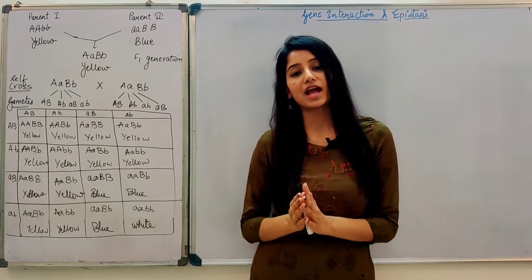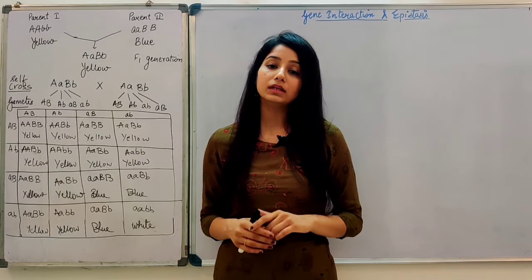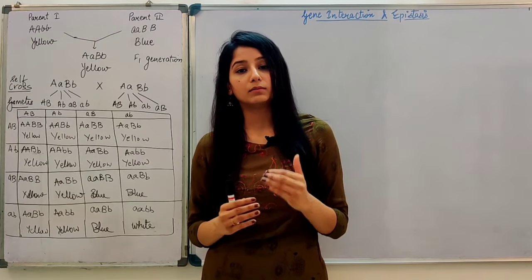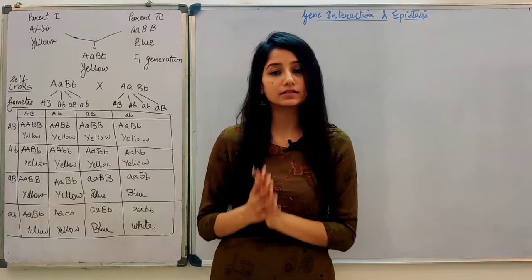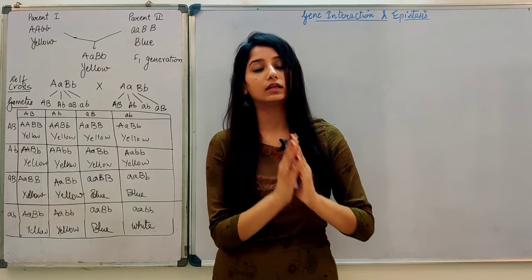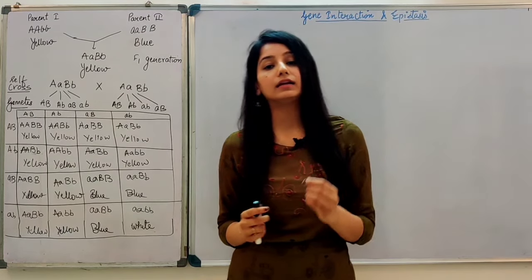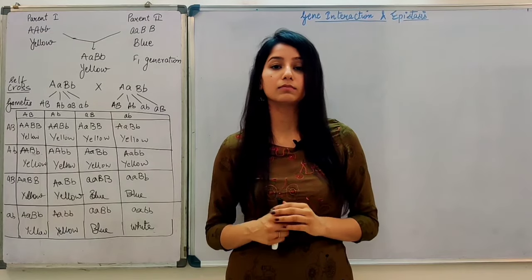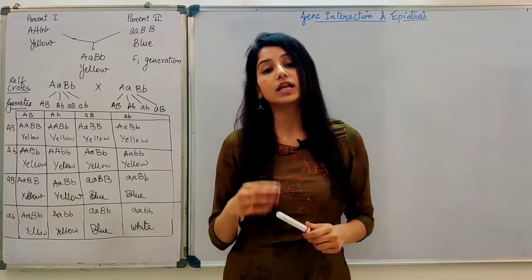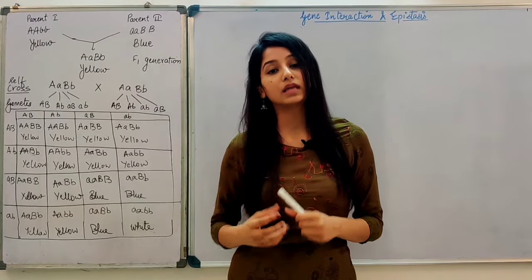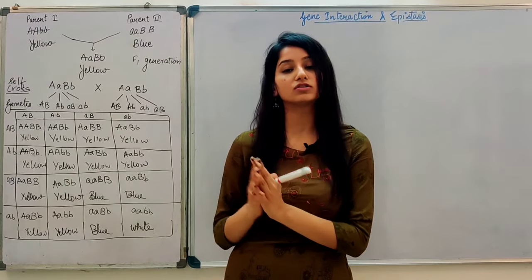What is gene interaction and what is epistasis? So, what we have seen about Mendel — what did Mendel do? He studied 7 characteristics of the pea plant. In Mendel's work, only one gene was responsible for each characteristic. For example, if we look at round seed, only one gene was responsible.